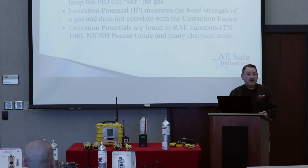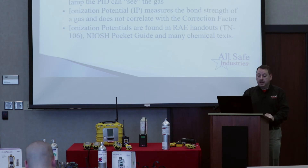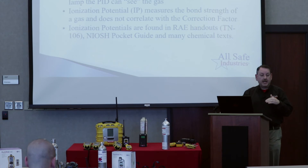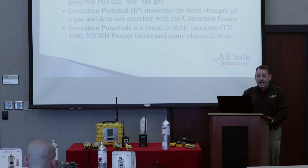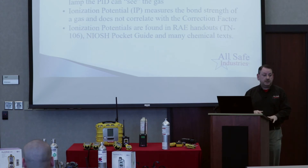Let's talk more about ionization potential. This is very important if you're responding to a call and you know you have a volatile organic compound you're dealing with. The IP — that number in parentheses — tells us if our PID sensor can read that gas or not. It's also known as ionization energy. If the IP is less than the output of your PID lamp, then our PID can see that gas. The ionization potential measures the bond strength, and as long as the ultraviolet light in our PID is stronger than the bond of the chemical, we can break that open and read that particular gas.